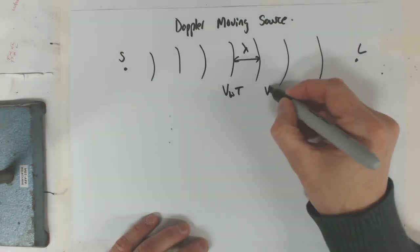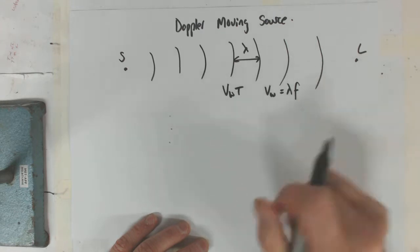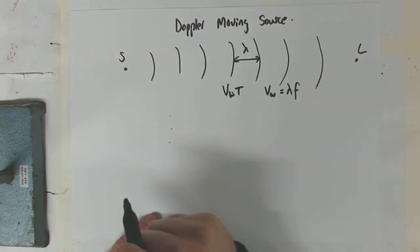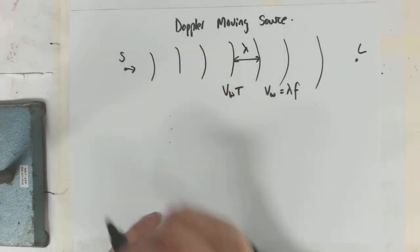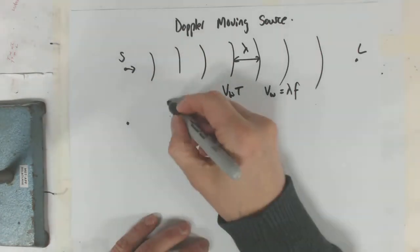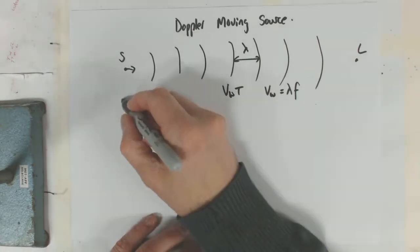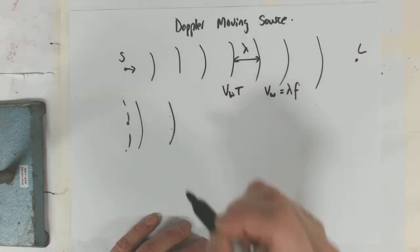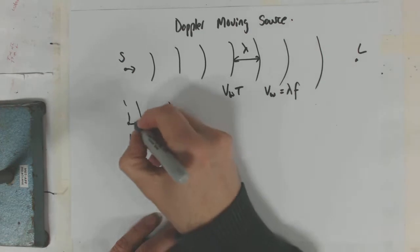Which is VW equals wavelength times frequency, frequency being 1 over T. So the issue we've got is what happens when the source actually moves. The source puts out a wave. One period later the wave's got to here, but during that one period later the source has moved a little distance there.